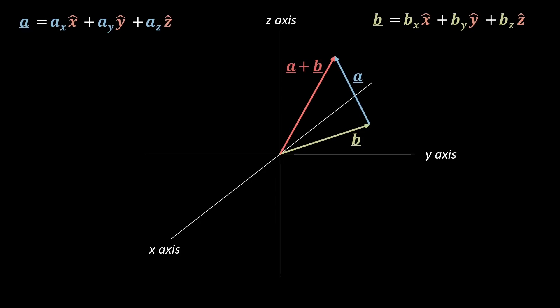That is, we take a plus b will be ax plus bx x-hat, plus ay plus by y-hat, plus az plus bz z-hat.